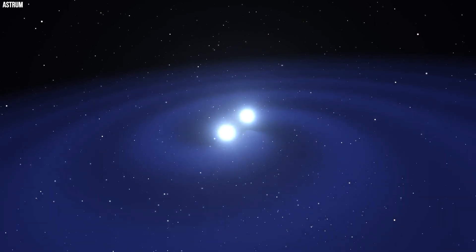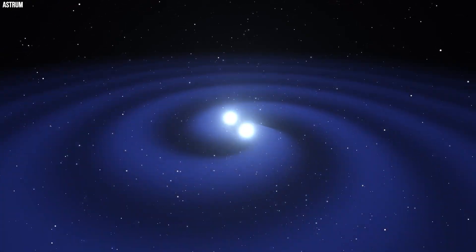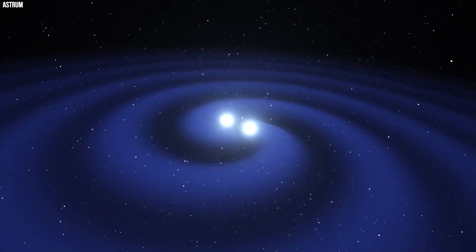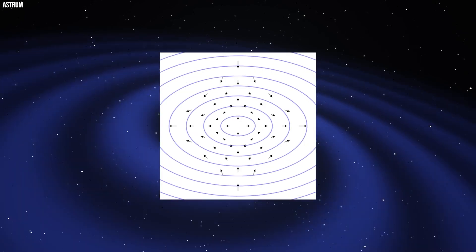To make this detection possible, astronomers required a gravitational wave antenna spanning the entire galaxy and a highly precise time measurement system using a network of cosmic clocks. Enter NanoGrav. So how did NanoGrav pick up low-frequency waves?